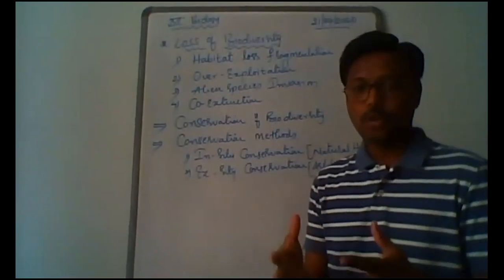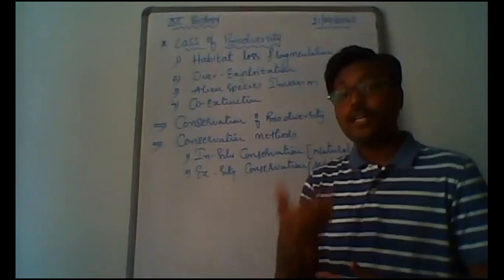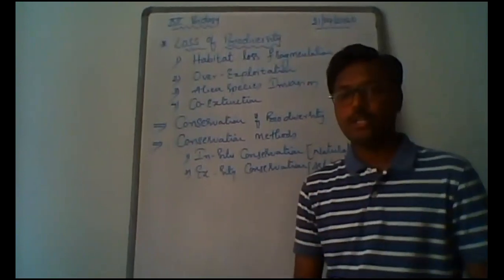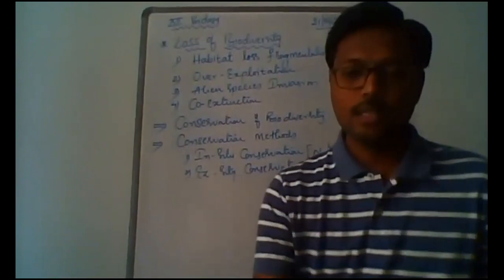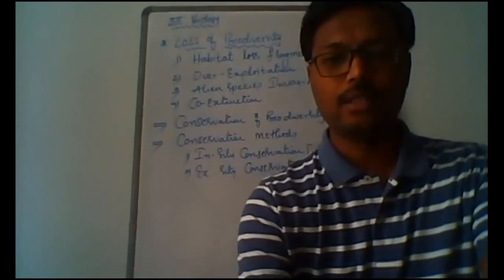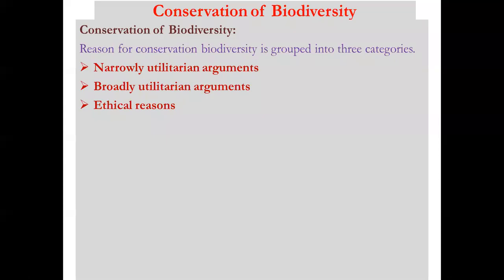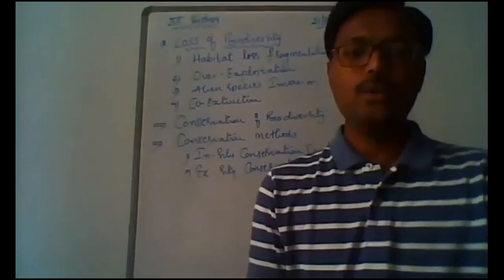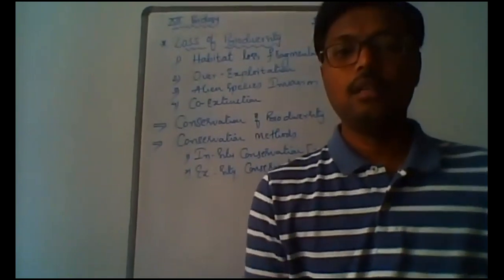To understand why we should conserve biodiversity, we must understand three important utilitarian concepts. The reasons for conservation of biodiversity are grouped into three categories: narrow utilitarian arguments, broadly utilitarian arguments, and ethical reasons.